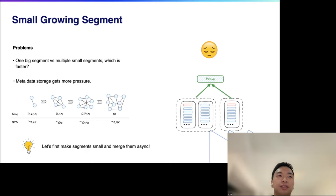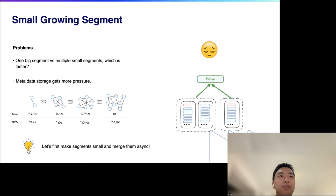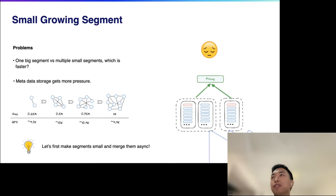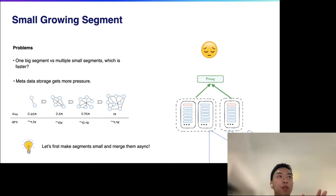To clarify: the growing segment uses a flat index — not HNSW — because HNSW building is super slow and we need the growing segment to serve data freshness. So the growing segment is flat, and a small growing segment leads to a small sealed segment. With constant total data, each additional segment makes search slower. Also, since each segment requires its own metadata, having too many small segments greatly increases pressure on metadata storage. So very small segments won't work either.